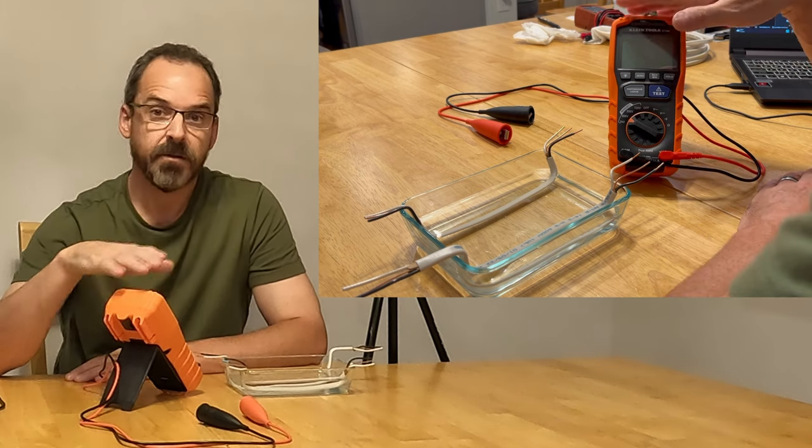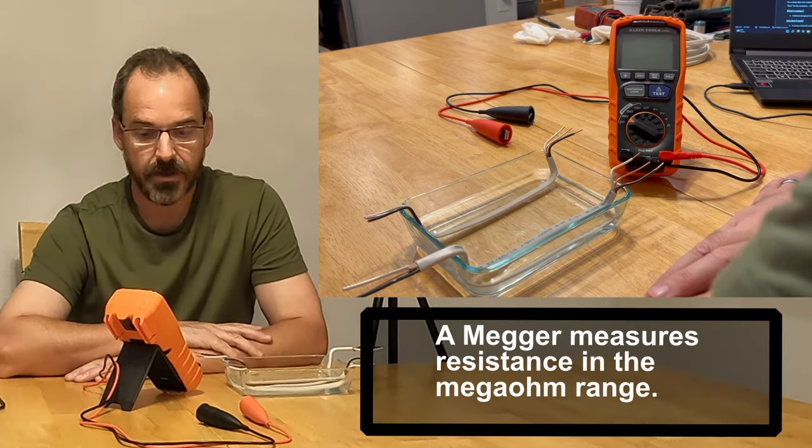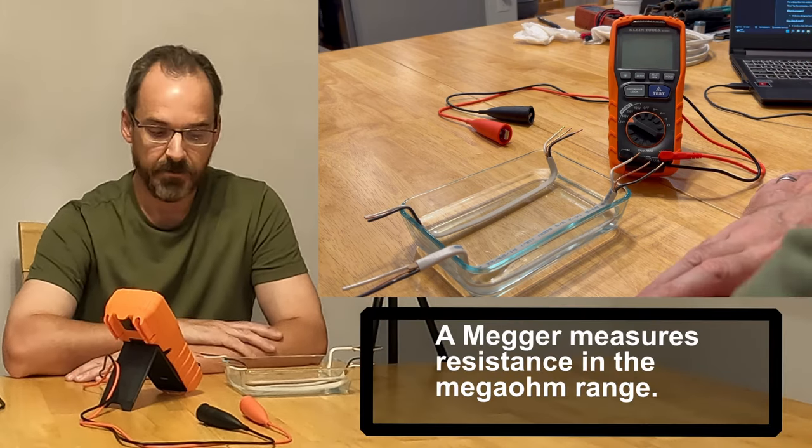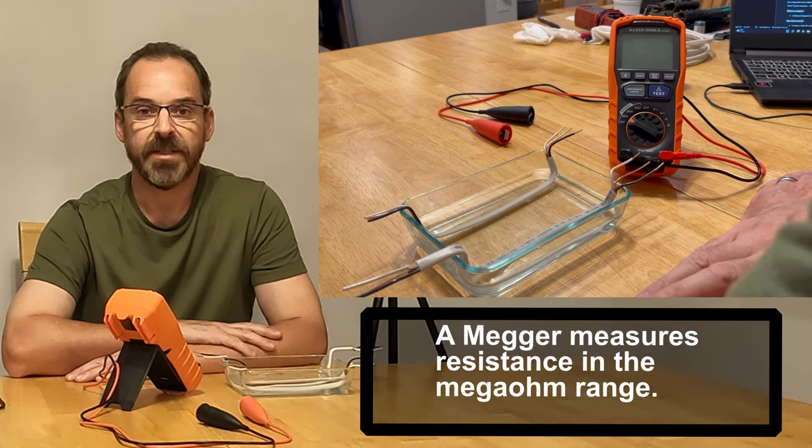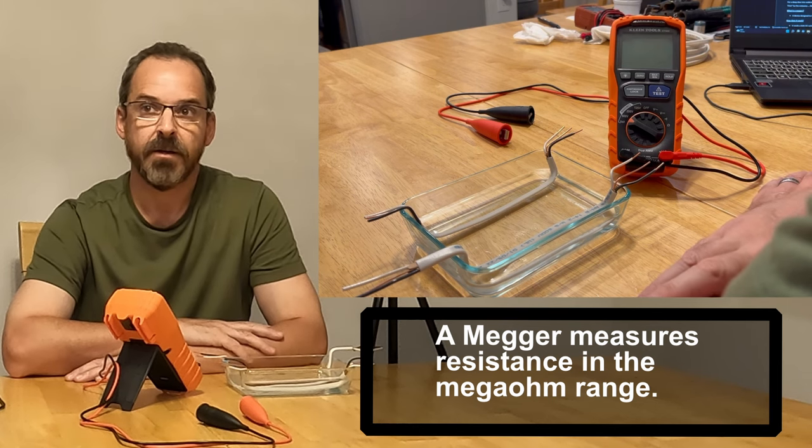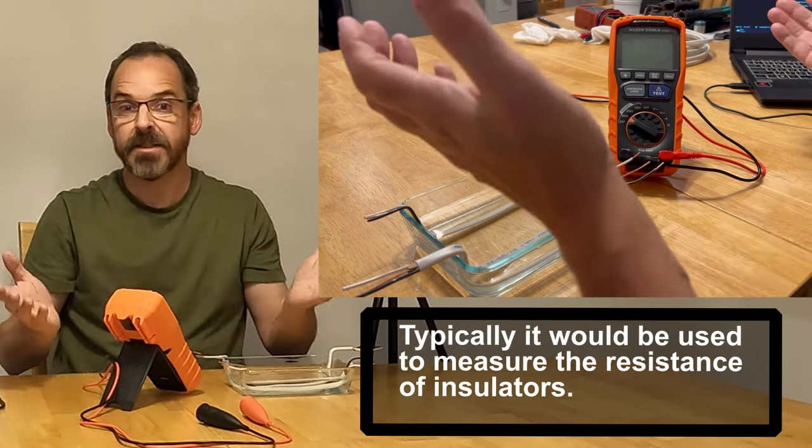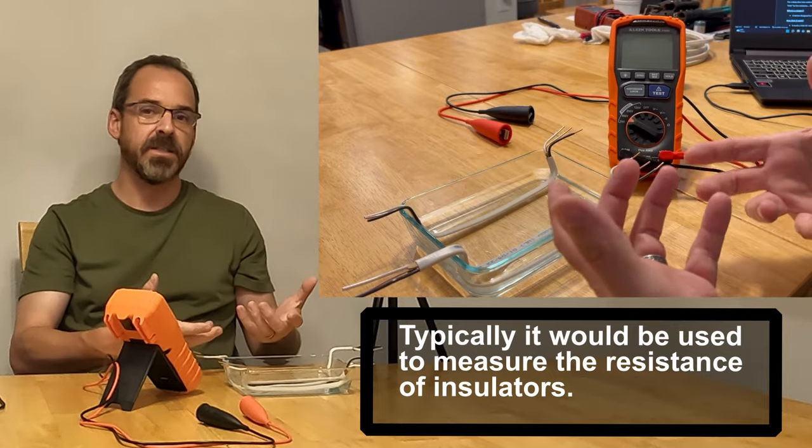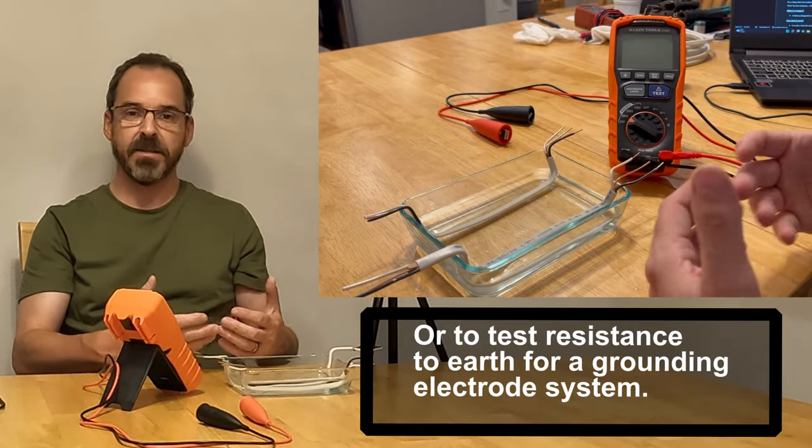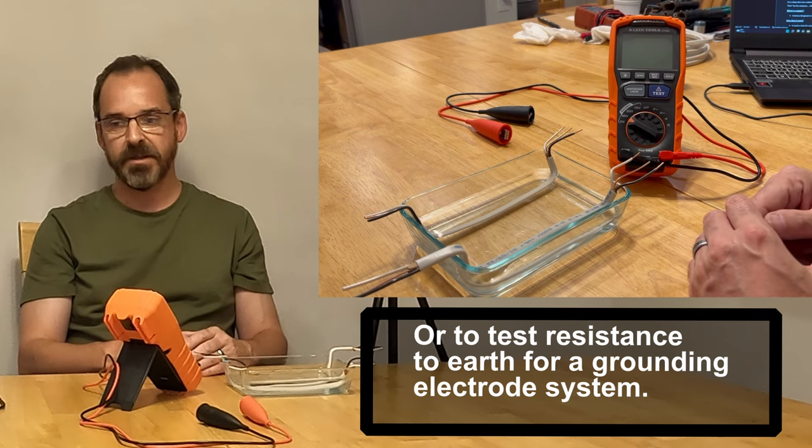So first of all, what is a Megger? A Megger is a testing device that measures the resistance between basically two points. We're testing insulation. More or less, that's the point, is to test the integrity of the insulation of a conductor.